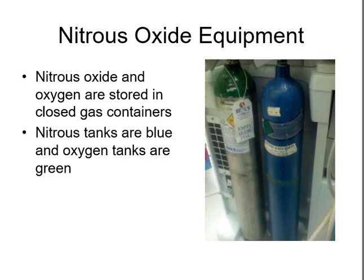Regarding nitrous oxide equipment, in the United States oxygen is always green — oxygen tanks are green and all tubing related to oxygen is green. Nitrous is blue — tubing is blue, everything is blue. The tanks can be stored away from the gas machine itself, and gas is transported through copper tubing.